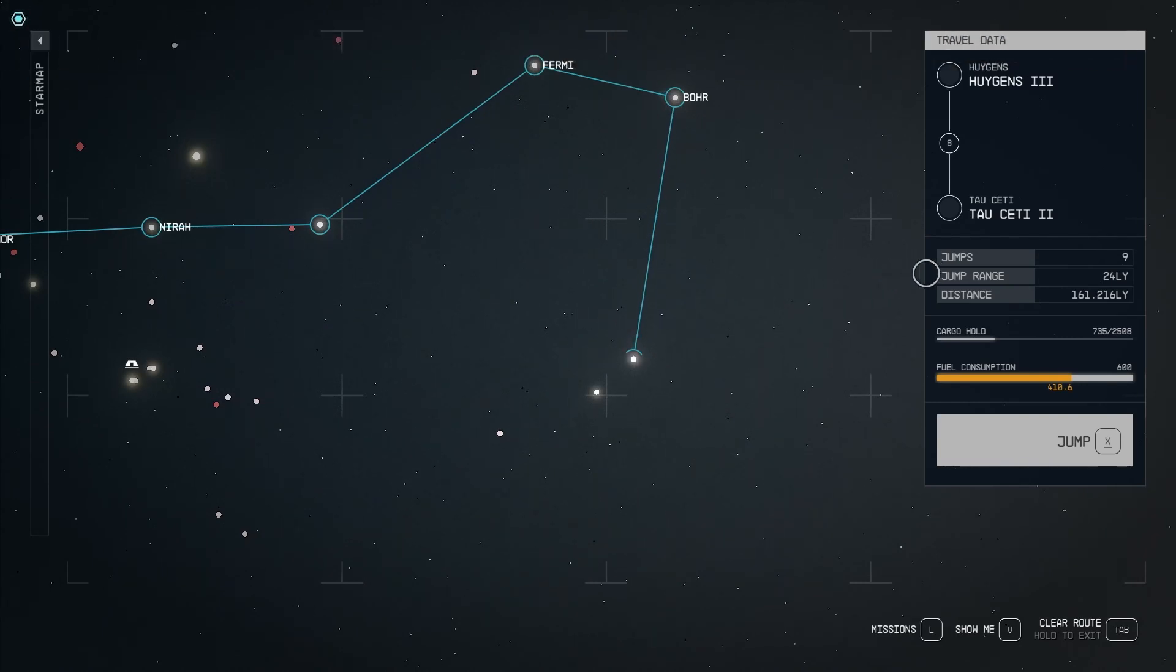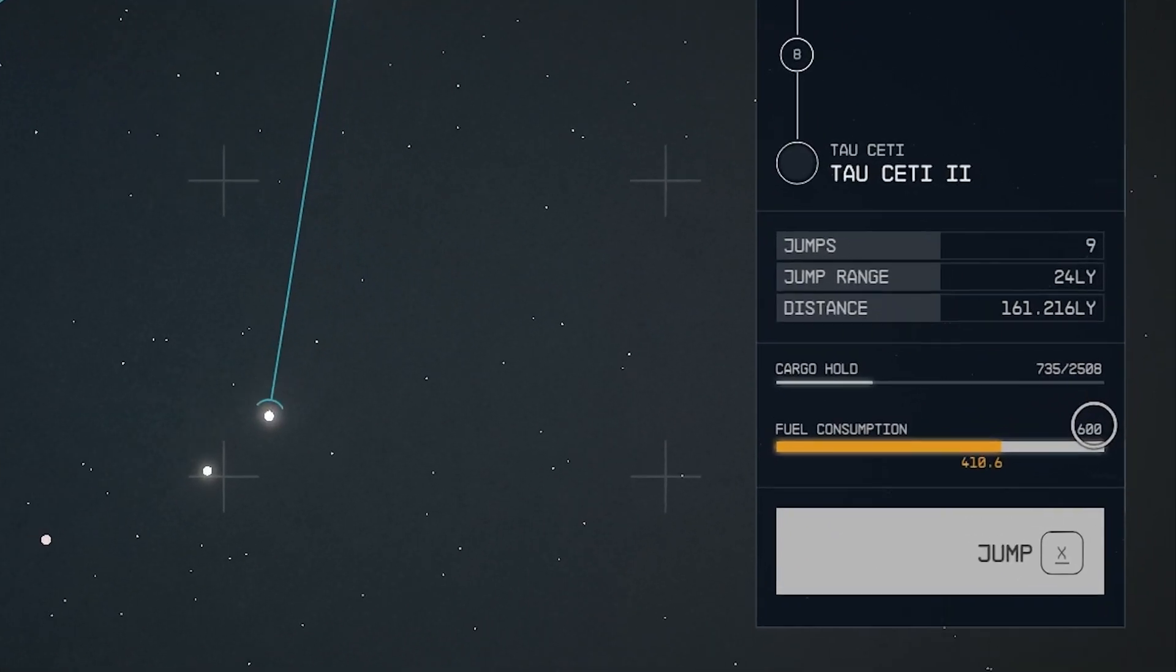let's talk about your jump range and fuel consumption. Your jump range, mine's 24 light years, is how far you can travel from one star to the next star along a path. Your fuel indicates how far you can travel in a given trip.